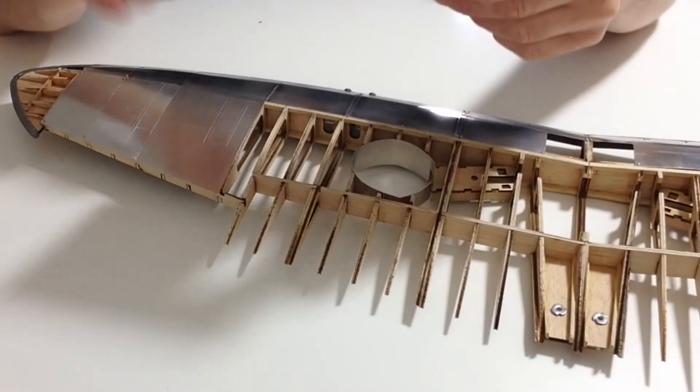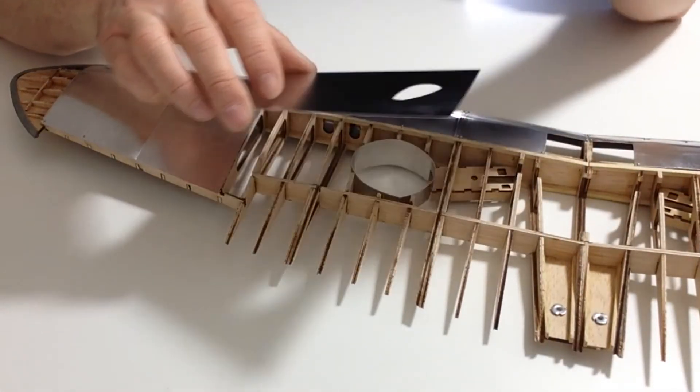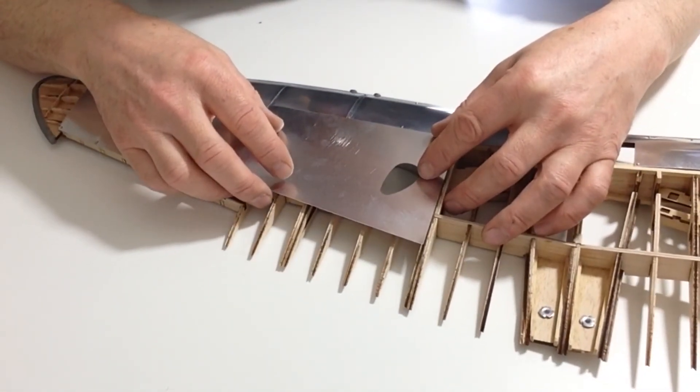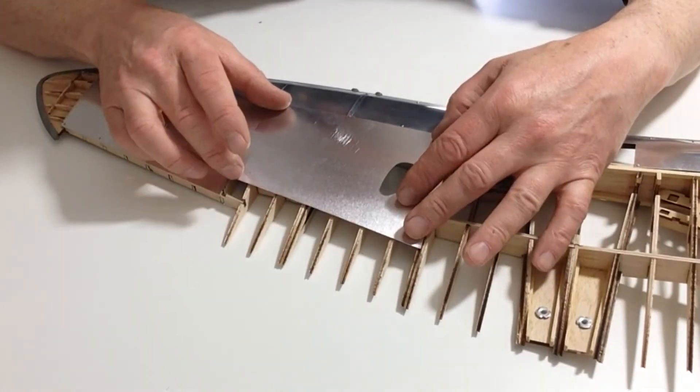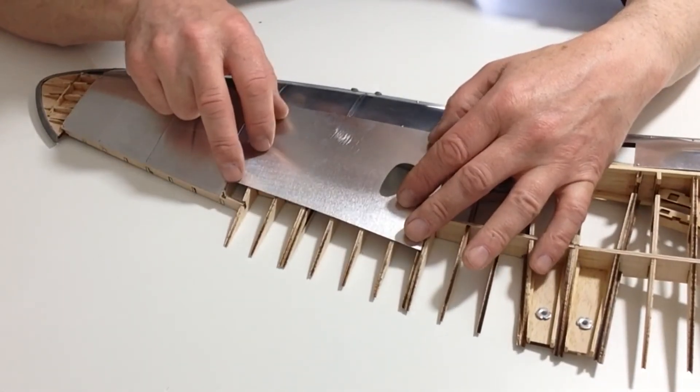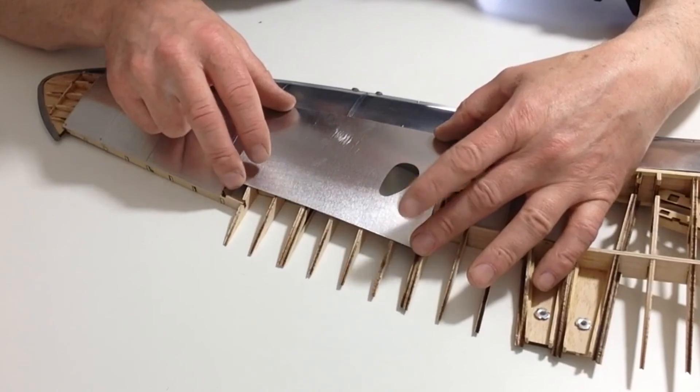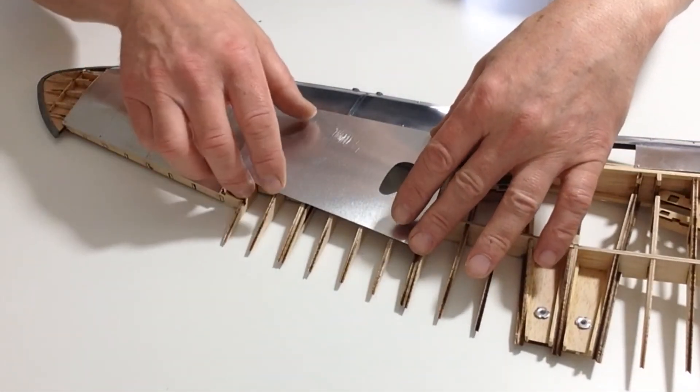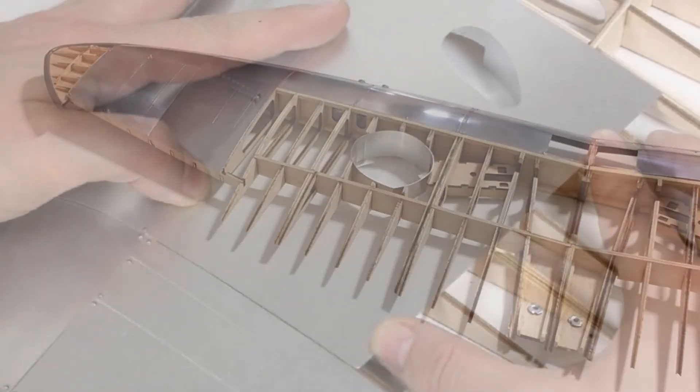The final part of this stage is to take plank number four that came with this part and test fit it so you can see where it's going with the rest of the wing. You can see the wing is coming along nicely. That completes this stage.